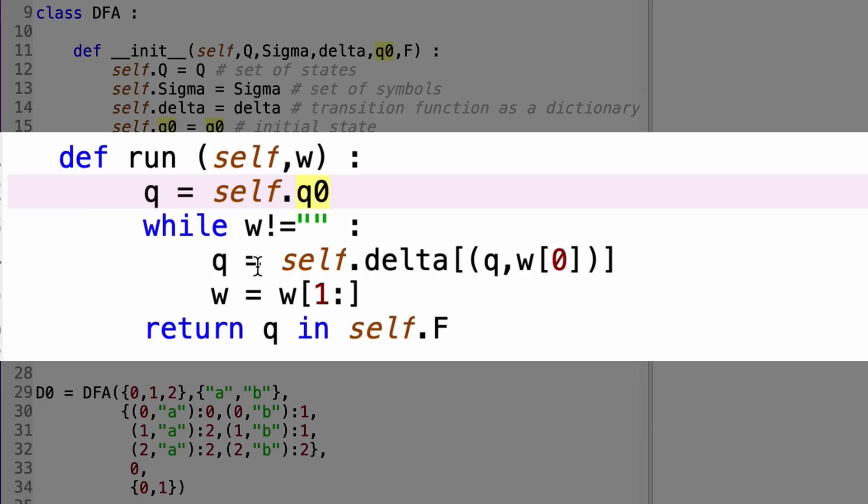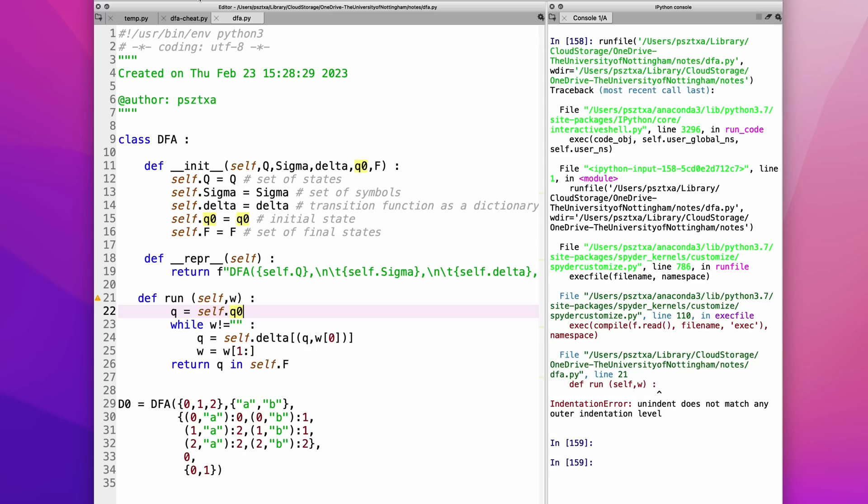And I also cut off the first symbol. And when I finish this, I return a boolean which says whether q is in the set of final symbols. Okay, I did something wrong - I did my indentation level wrong. Okay, now it works.